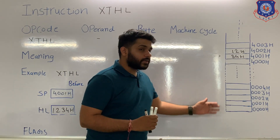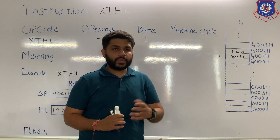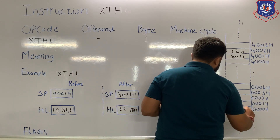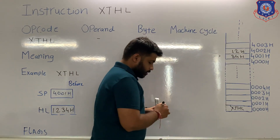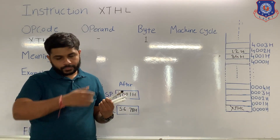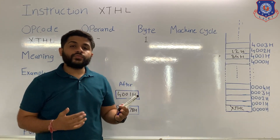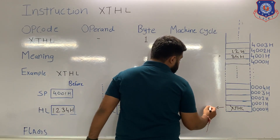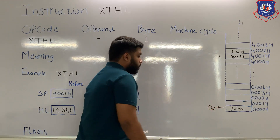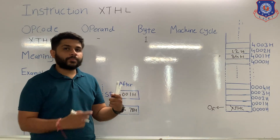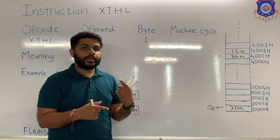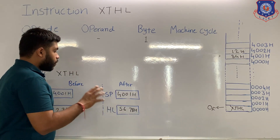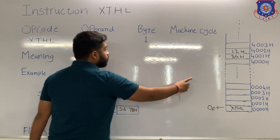This instruction is stored in memory and will occupy only 1 memory location. When this instruction is fetched, the microprocessor will perform its first machine cycle — the opcode fetch. When the microprocessor performs the opcode fetch, the processor will decode and execute the instruction.